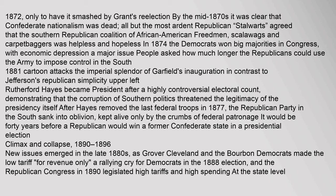By the mid-1870s it was clear that Confederate nationalism was dead. In 1874 the Democrats won big majorities in Congress, with economic depression a major issue. Rutherford Hayes became president after a highly controversial electoral count, demonstrating that the corruption of Southern politics threatened the legitimacy of the presidency itself. After Hayes removed the last federal troops in 1877, the Republican Party in the South sank into oblivion, kept alive only by the crumbs of federal patronage. It would be forty years before a Republican would win a former Confederate state in a presidential election.